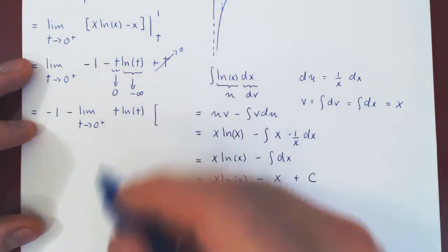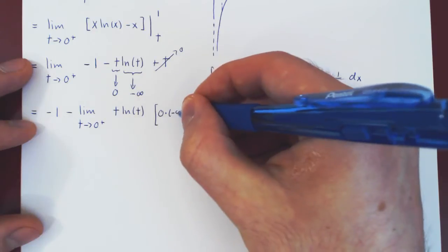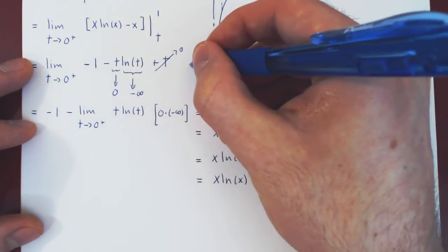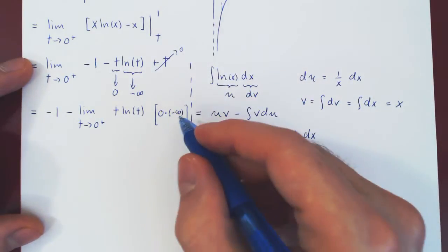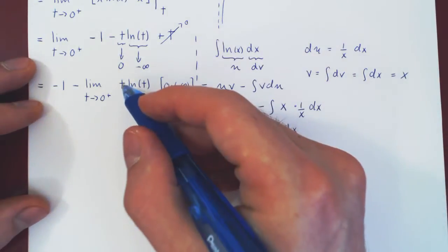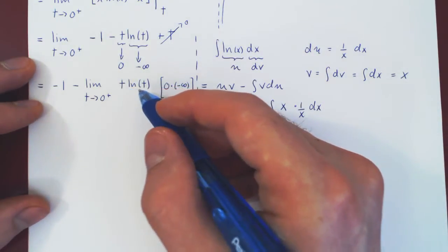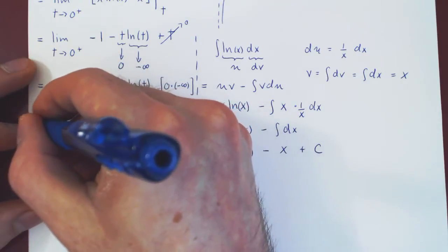Which gives us a 0 times negative infinity case. And this is again a non-trivial case. Well, I can simply rewrite times t as 1 over 1 over t, and then I will be able to apply L'Hopital's Rule.